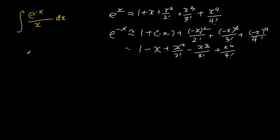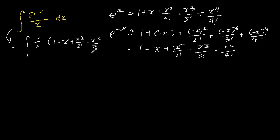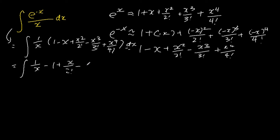Once we are able to express e to the power of negative x as a Maclaurin series, we can now proceed to solve the problem by substituting it in. So we have the integral of 1 minus x plus x squared over 2 factorial minus x cubed over 3 factorial plus x to the power of 4 over 4 factorial, all over x dx. Expanding, we get the integral of 1 over x minus 1 plus x over 2 factorial minus x squared over 3 factorial plus x cubed over 4 factorial dx.